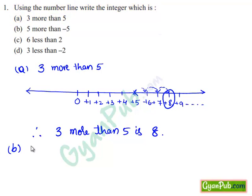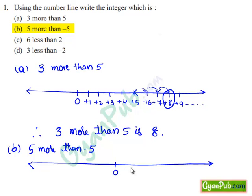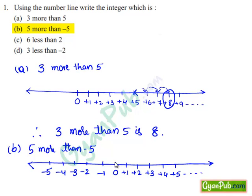Take down part b: 5 more than minus 5. To know the integer which is 5 more than minus 5, we will use a number line. Mark zero in the middle. Right side of zero are plus 1, plus 2, plus 3, plus 4, plus 5 and so on. Left side of zero are minus 1, minus 2, minus 3, minus 4, minus 5. First, we will move 5 steps to the left of zero: 1, 2, 3, 4, 5. Then mark minus 5 on the number line.